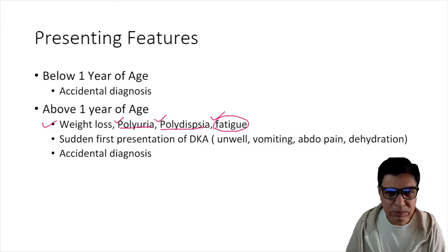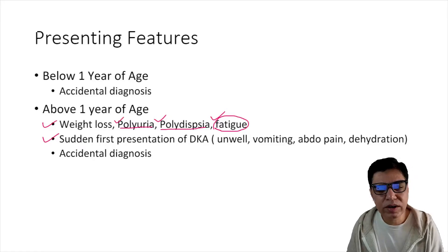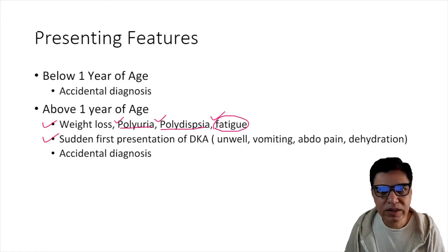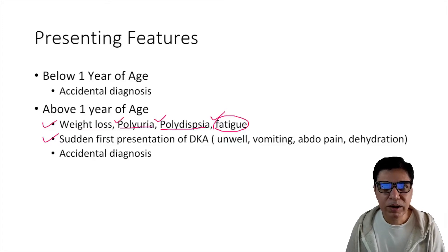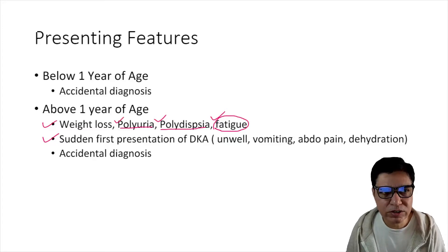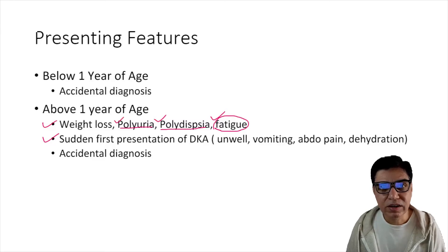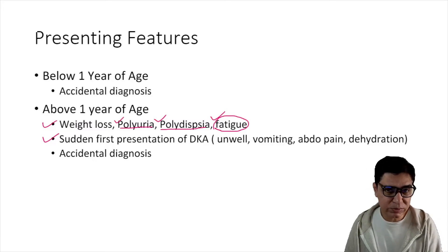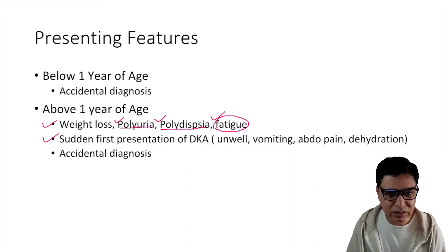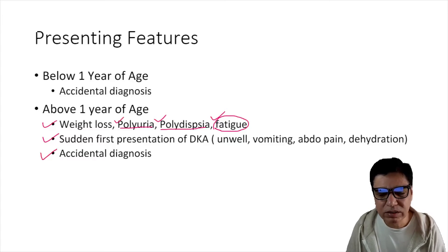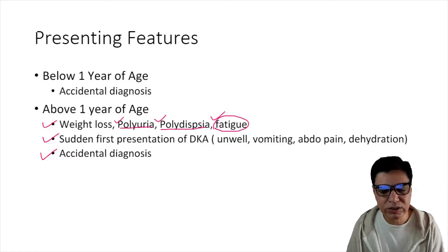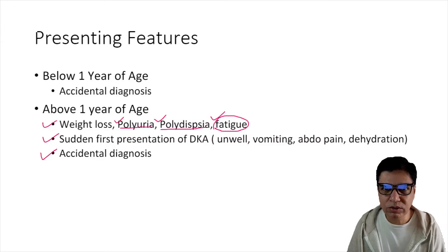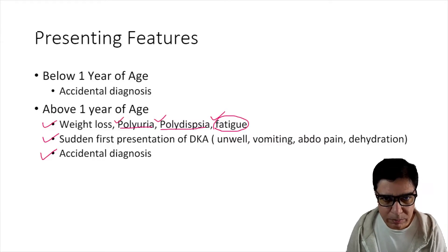Sometimes a child is fine and then suddenly presents with diabetic ketoacidosis — vomiting, abdominal pain, fruity breath smell — and is brought to hospital. Blood glucose is elevated, ketones are raised in blood or urine. This is the first presentation as DKA. The third form is completely asymptomatic — an accidental finding of elevated blood glucose during workup for an unrelated condition.